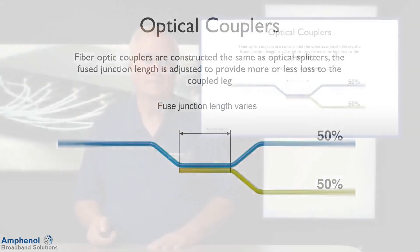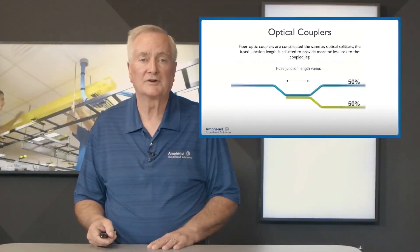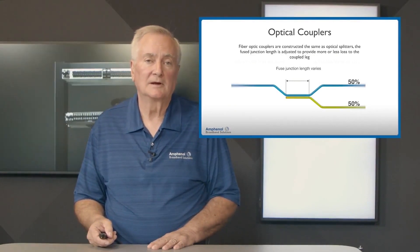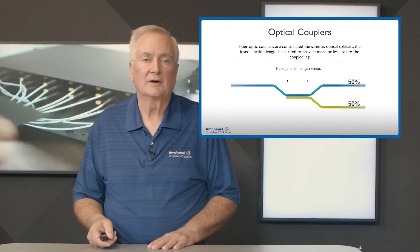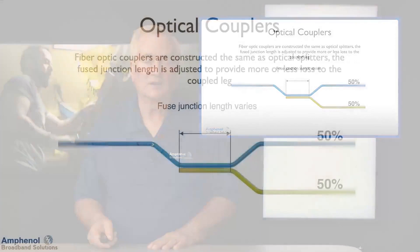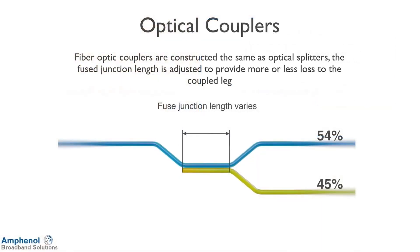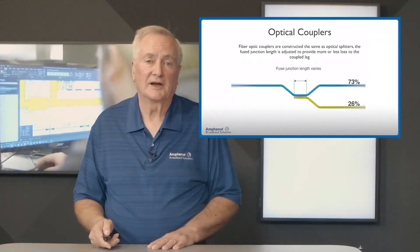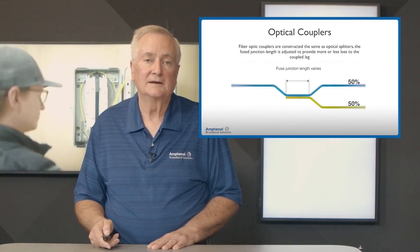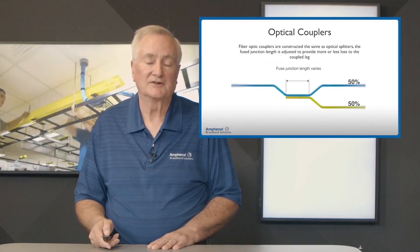Next we'll look at optical couplers. There are times when we need more light in one direction than the other, and that's what an optical coupler does — very similar to RF couplers. Here I'm showing an input with two outputs at 50% of the light. By shortening the junction where the fibers are fused together, we can go from 50-50 power to where one leg has 90% power and the other has 10%. These come in various percentages: 90-10, 80-20, 70-30, and 60-40.